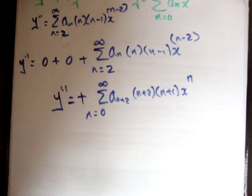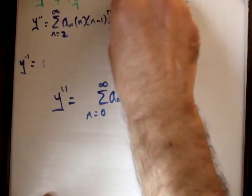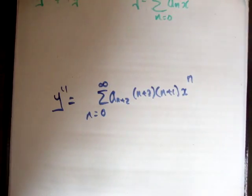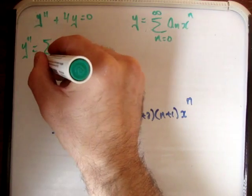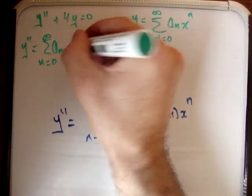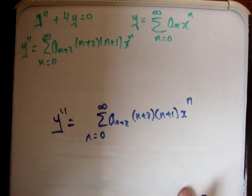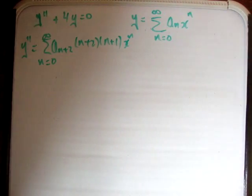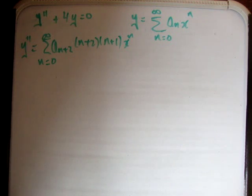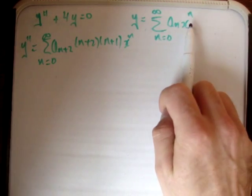So y double prime is equal to the sum from n equals 0 to infinity of a_{n+2} times (n+2) times (n+1) times x to the n. I suggest doing it this way rather than writing it straight out, because with more complicated problems, that isn't the general rule. Next we need to plug these values into our power series, noting that both series begin at n equals 0 and have power x to the n.